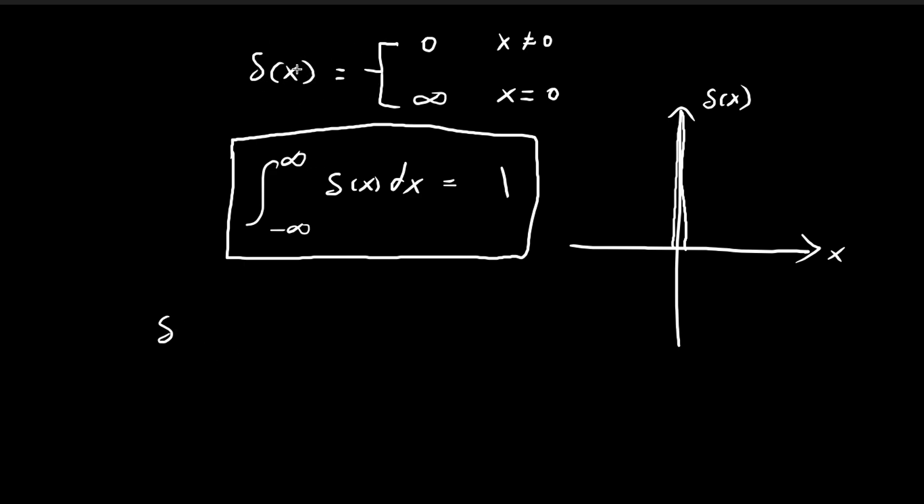if we have delta of x minus a, this is a translation of the spike to the right. This function would be a spike at this location. When x equals a, the argument equals a minus a, which is 0, so the spike is at this point.